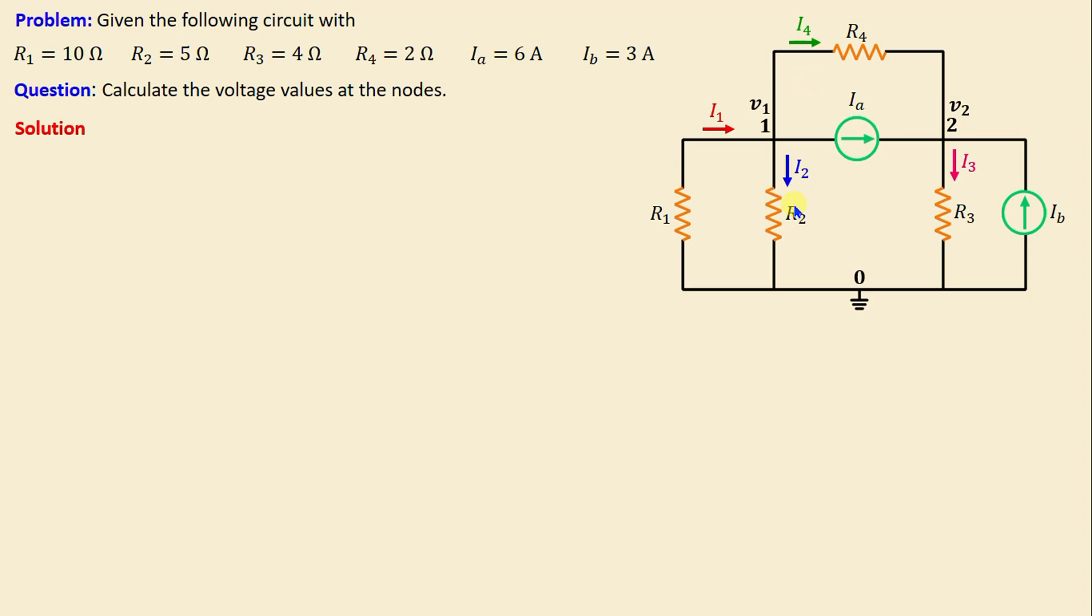We will proceed to apply Kirchhoff's Current Law at each node. At node 1, by applying Kirchhoff's Current Law we can write: I1 = Ia + I2 + I4. At node 2, we can write: I3 = Ia + Ib + I4.